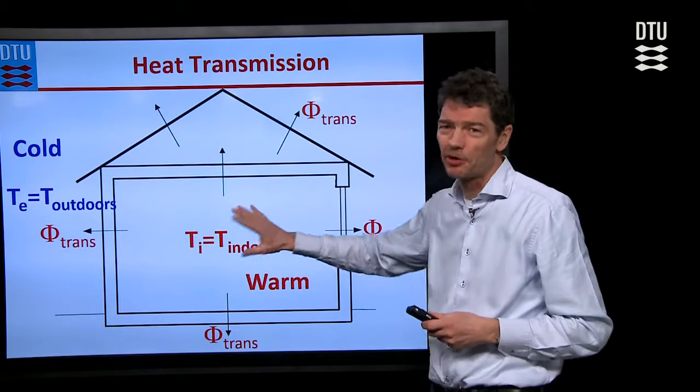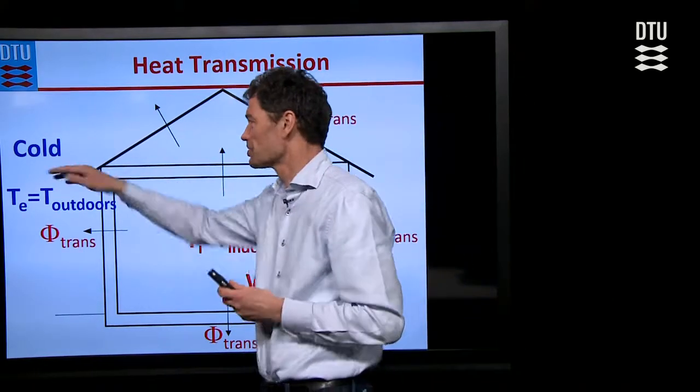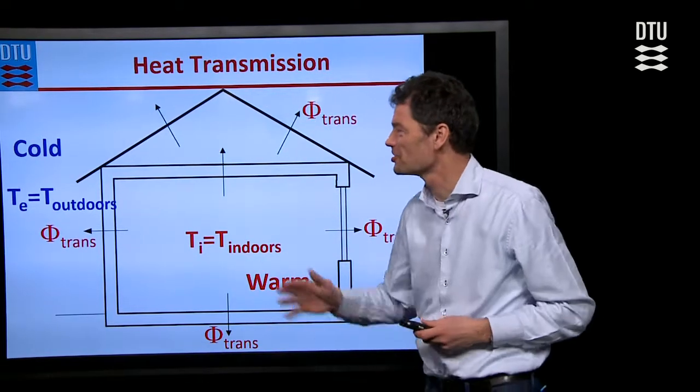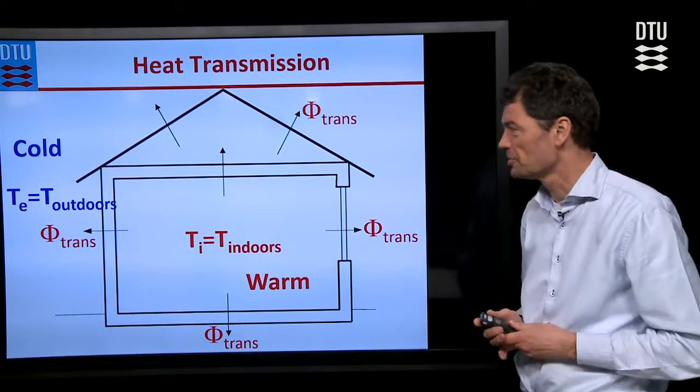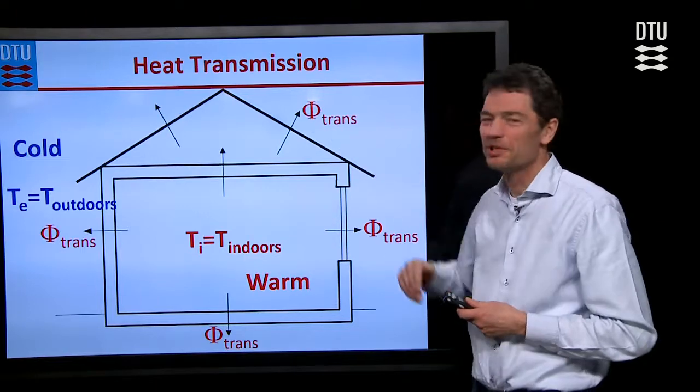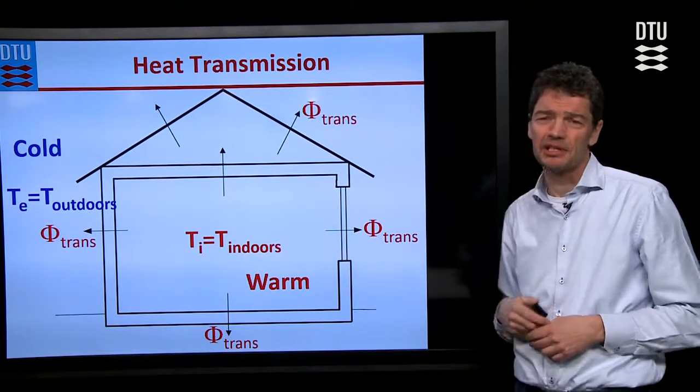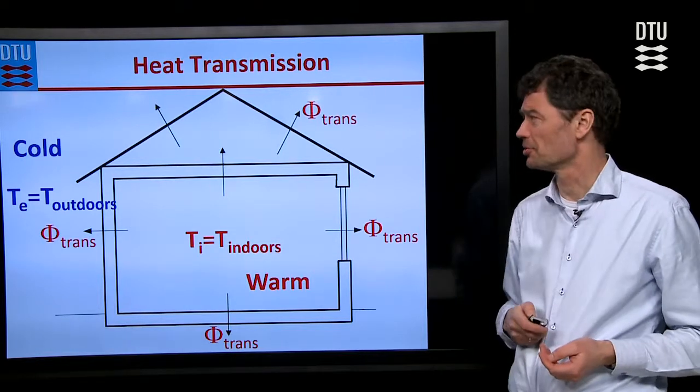We have heat transmission from our buildings, which are normally heated, compared to the outdoors where it's colder, at least in Denmark. So we have heat transmission in that direction from warm to the outside cold. And this heat transmission has different elements by the mechanisms that we will illustrate here in this little lecture.